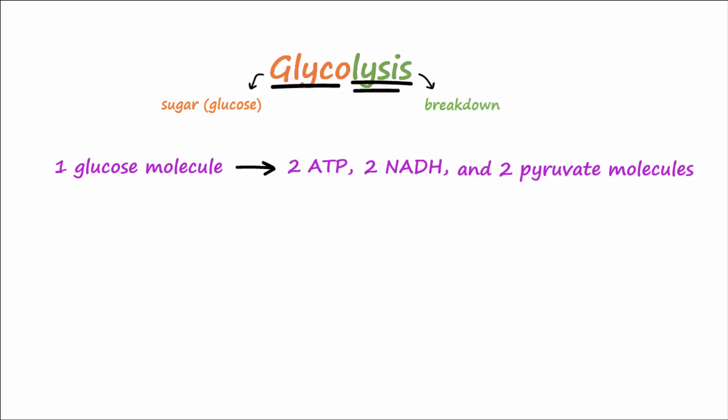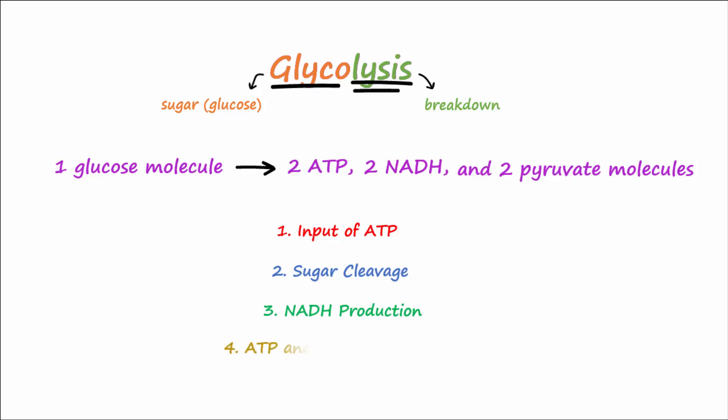This breakdown of sugar, or glucose, is a process accomplished in ten steps. However, here we simplify the process of glycolysis into four major steps: first, input of ATP; second, sugar cleavage; third, NADH production; and fourth, ATP and pyruvate production.